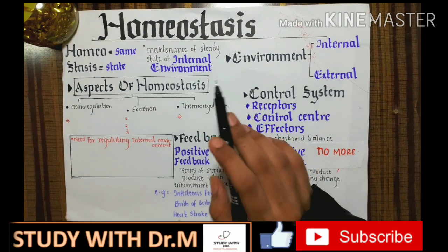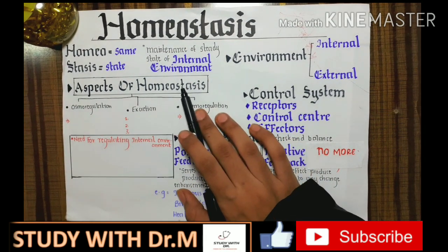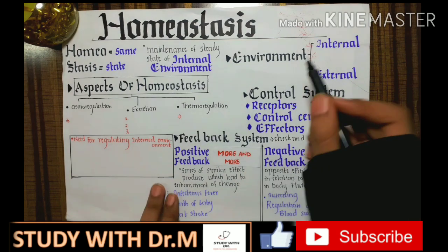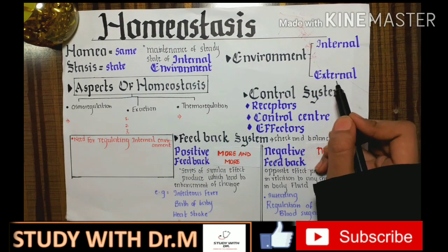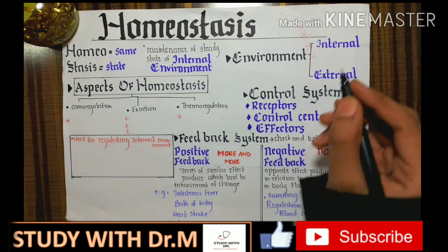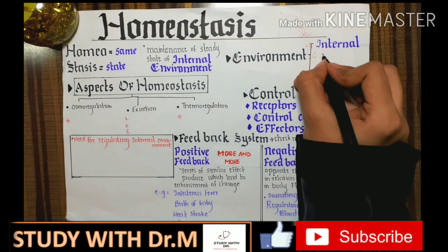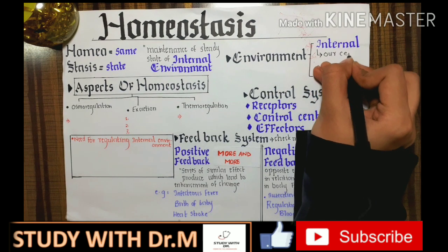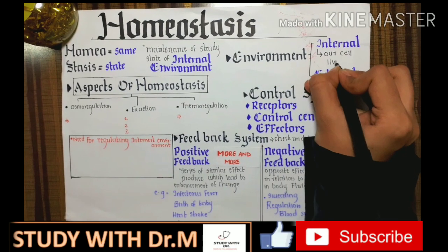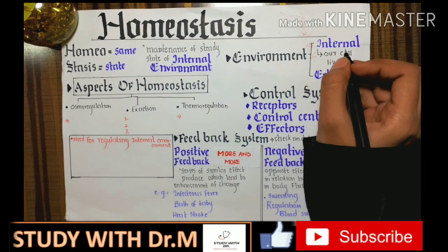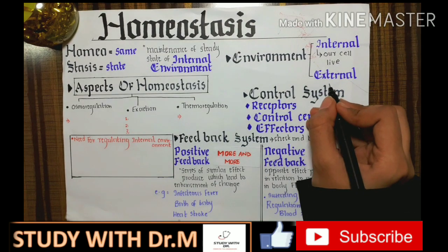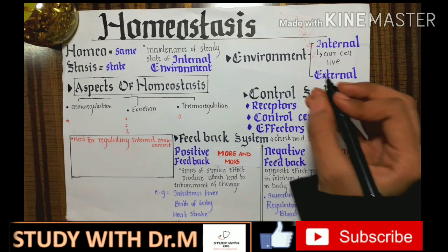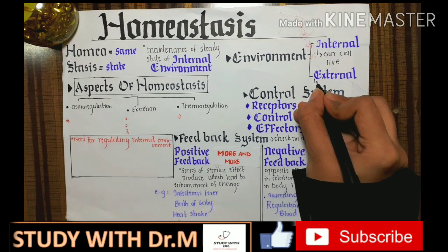Before going to know what the internal environment is, let us know what environment is. Environment is of two types: internal environment and external environment. The internal environment is the environment in which our cells live. Our cells live in the tissue fluid, so the tissue fluid is the internal environment of our cells.